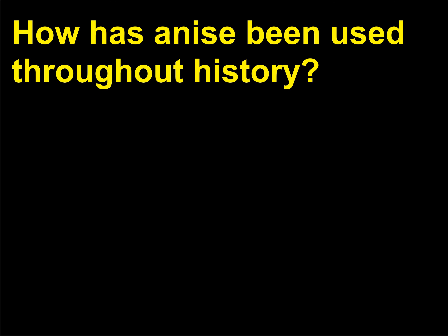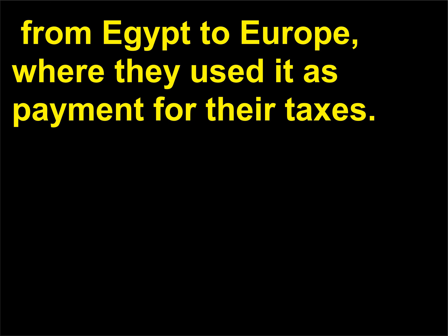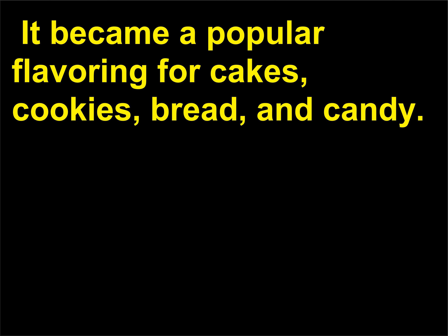How has anise been used throughout history? The Romans brought the licorice-flavored herb anise, Pimpinella anisum, from Egypt to Europe, where they used it as payment for their taxes. It became a popular flavoring for cakes, cookies, bread, and candy.